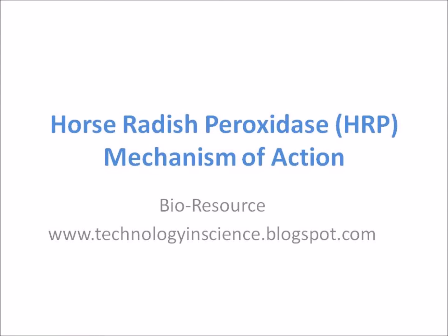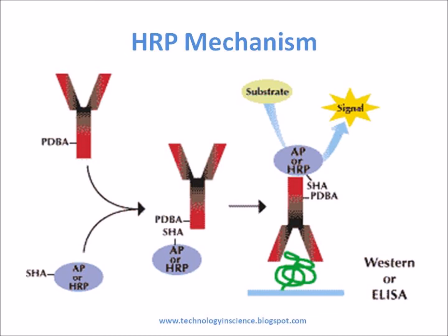Horseradish peroxidase mechanism of action. Horseradish peroxidase is a heme-containing protein isolated from wild horseradish roots. HRP catalyzes the transfer of two electrons from a substrate to hydrogen peroxide, to generate water and an oxidized donor.